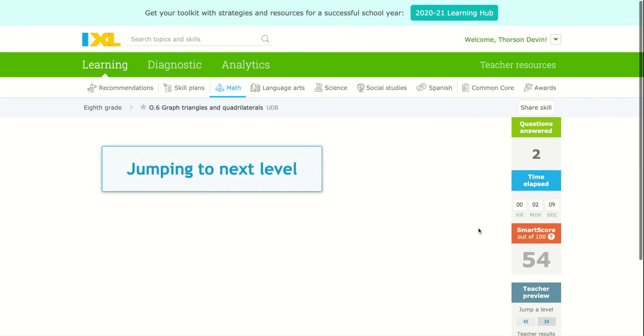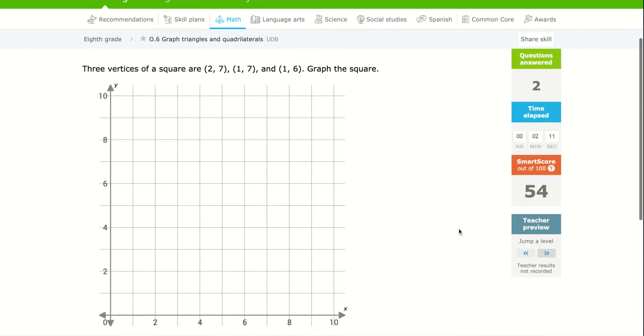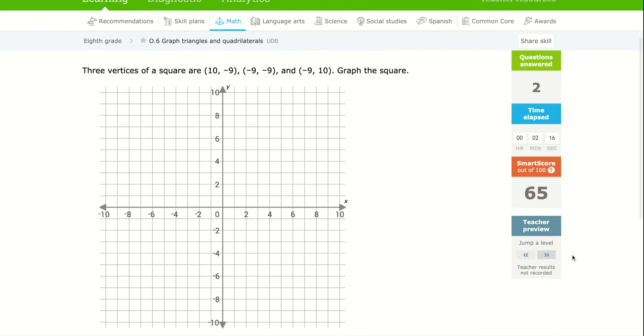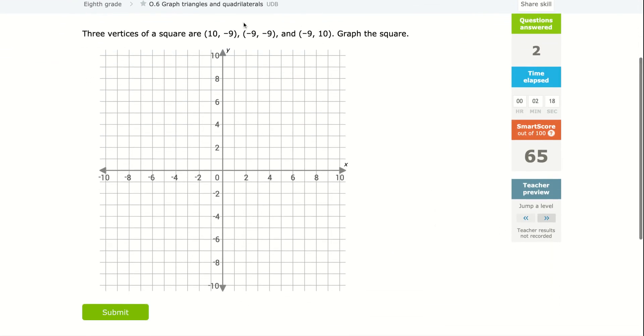As you move forward, they might give you parallelograms and rhombuses. So far, they're just giving me squares. Well, and then they're going to do the whole coordinate system. So let's do one of these. The three vertices of a square are (10, -9). So positive 10 is the X, negative nine is the Y, then (-9, -9). So I'm going to go back negative nine, down negative nine. It looks like it's going to be a very big square.